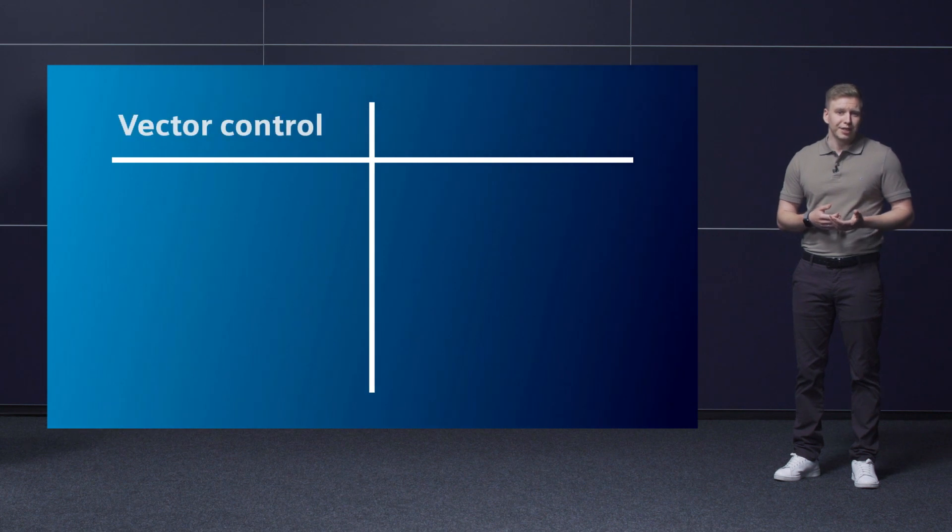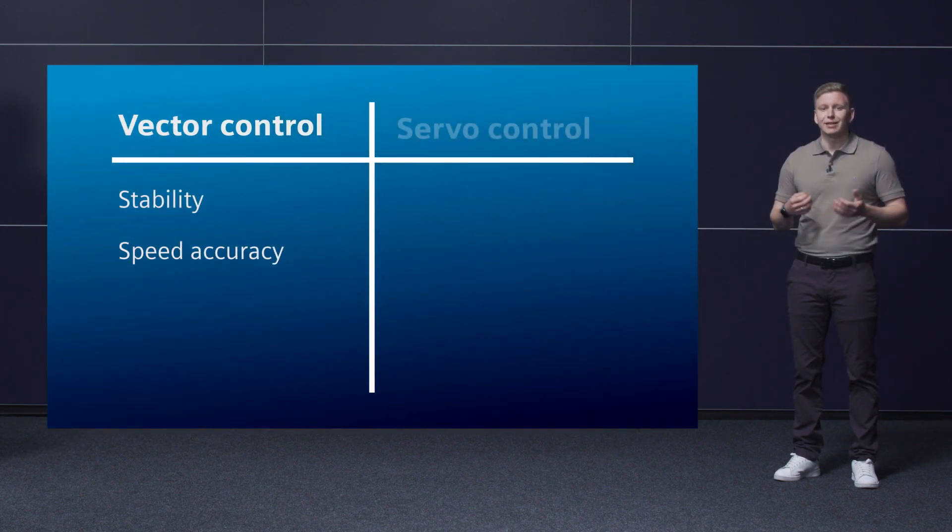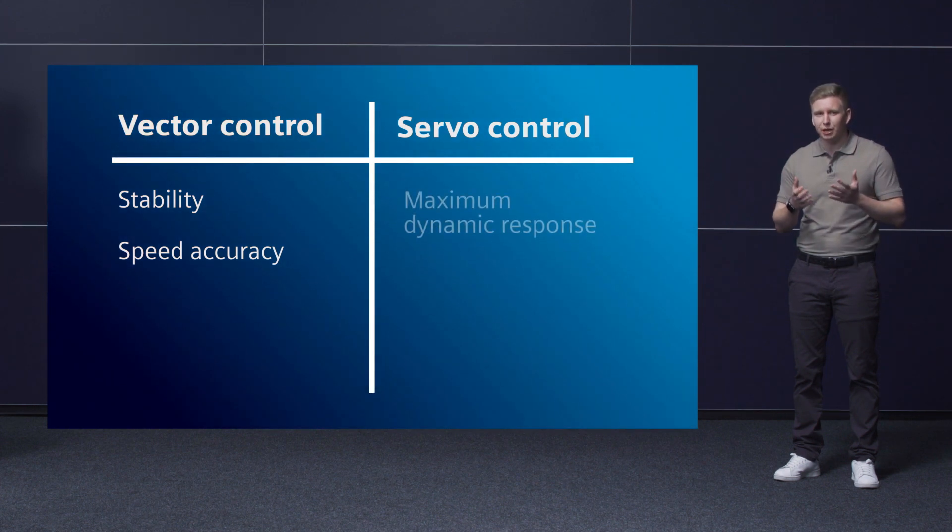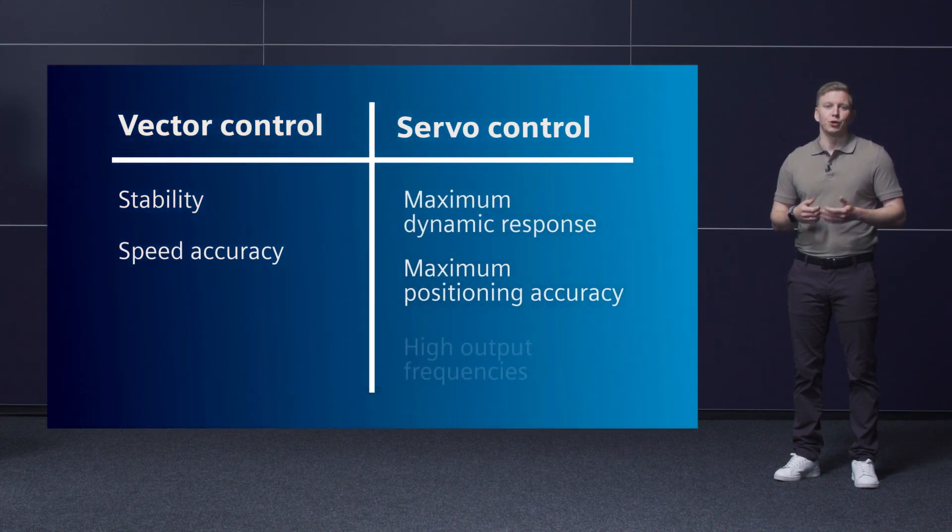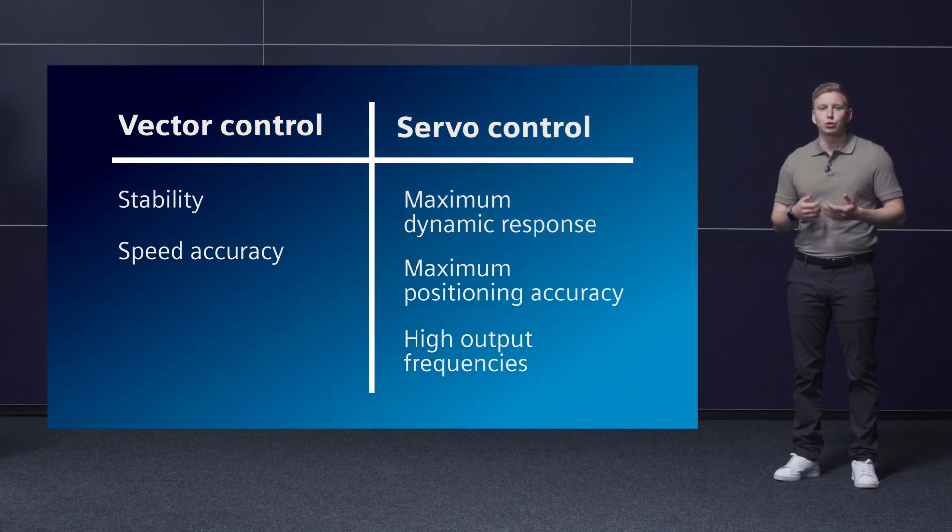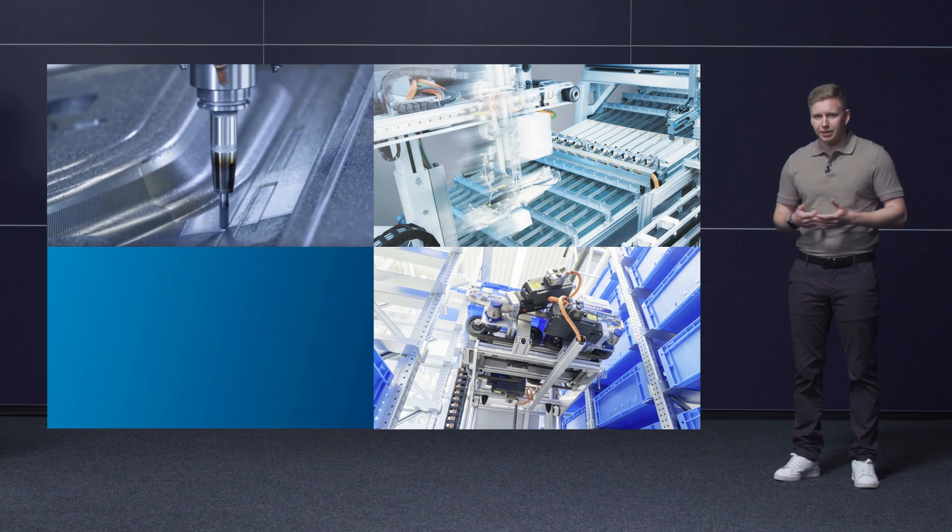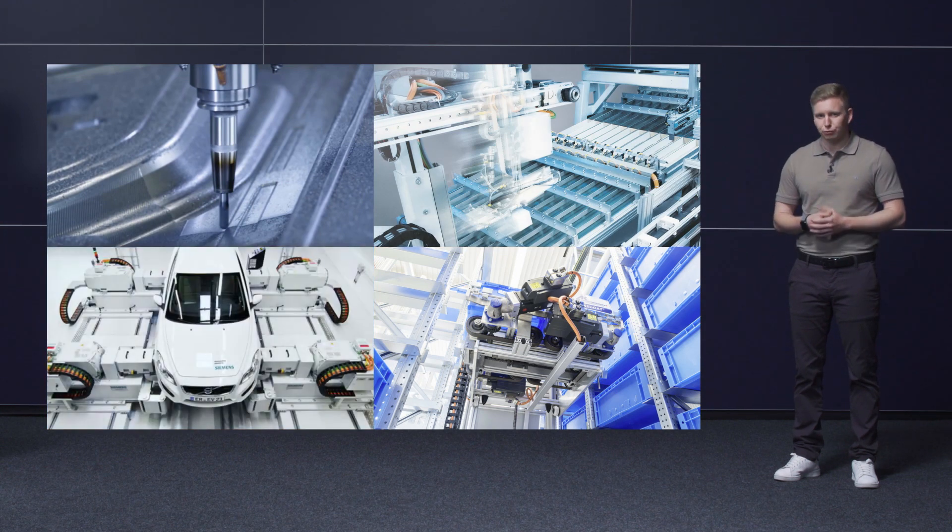Now, apart from vector control, there's also servo control. What are its distinguishing features and what is it used for? Compared to vector control, which is optimized more for stability and accuracy of speed, servo control is optimized for maximum dynamic response, high positioning accuracy, and a higher output frequency. It's therefore used for highly dynamic applications, such as machine tools or production machinery, for positioning axes, pick-and-place applications, and for motor test benches.